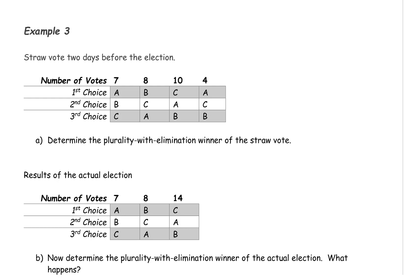In this example, we're going to use the plurality with elimination method to count votes one more time. Here we have the preference schedule for a straw vote that was done two days before an election. This is to get an idea of what voters are wanting ahead of an election.